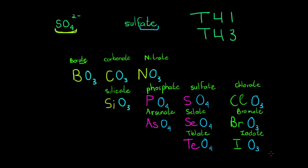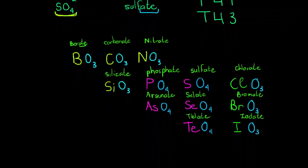There we have all the names. Now we need to get the charges. The easiest way is to remember a key one — for example, sulfate has a two-negative charge, which is worth remembering because you use it so often. You could also remember that borate, the first one in the T, has a three-negative charge.